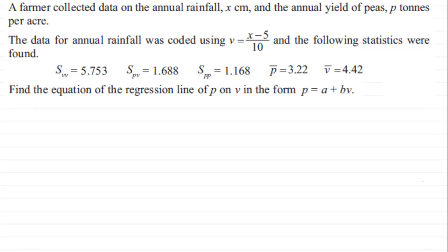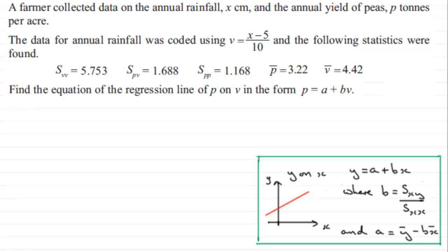Normally when you're asked to do regression lines, you're given data of the form x and y. If your y axis is the vertical axis and your horizontal axis here is x, we often talk about y on x. The equation or the regression line here has the form y equals a plus bx, where b is given by the statistic sxy over sxx, and the constant a is given by y bar minus b times x bar.